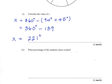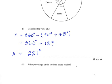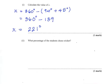Next we're asked what percentage of the students chose cricket? Now cricket is represented by 94 degrees. So cricket would be 94 degrees out of 360 degrees, and I'm going to multiply that by 100 to get our percentage.